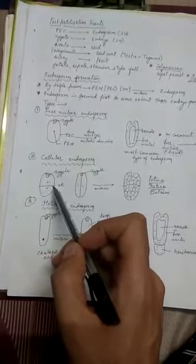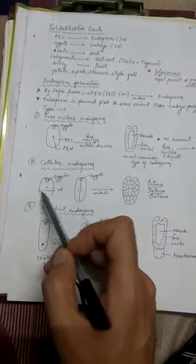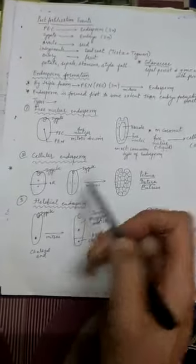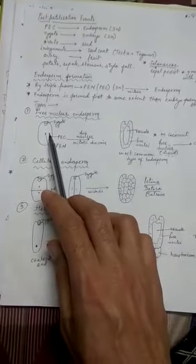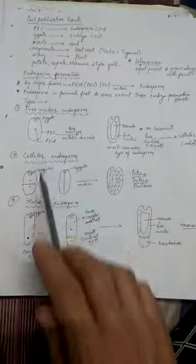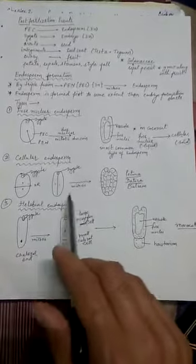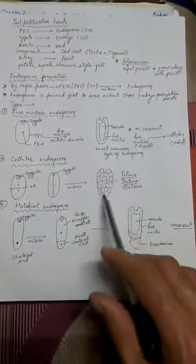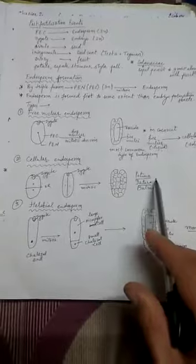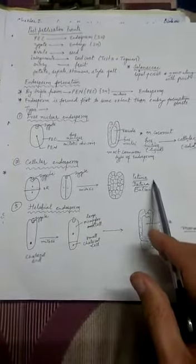Cellular endosperm is one in which the very first division is a nuclear division followed immediately by cytoplasmic division, either in the horizontal/transverse manner or the longitudinal/vertical manner. Every karyokinesis is followed by a cytokinesis, and a large number of mitotic divisions take place, finally forming a cellular endosperm. Easiest examples are from the Solanaceae family: Petunia, Datura, and Balsam.